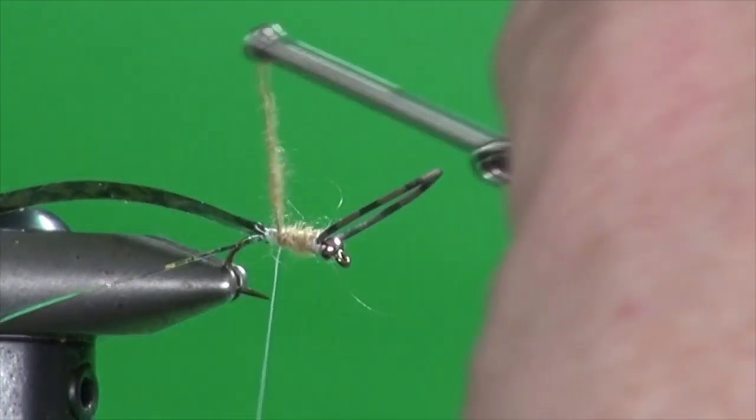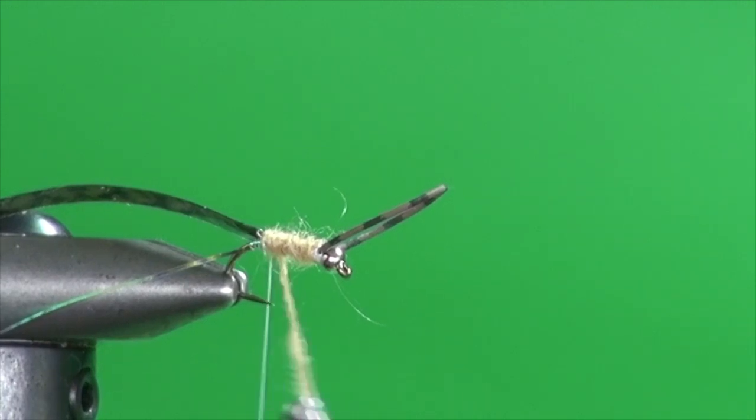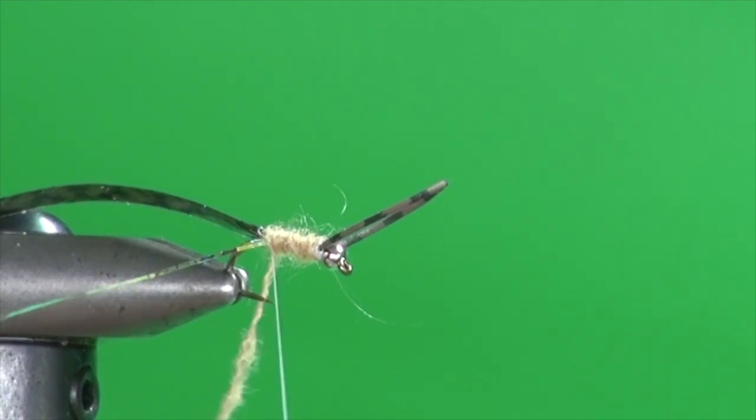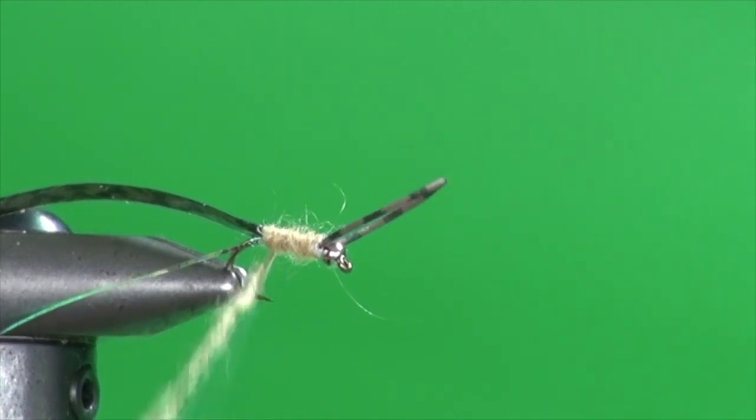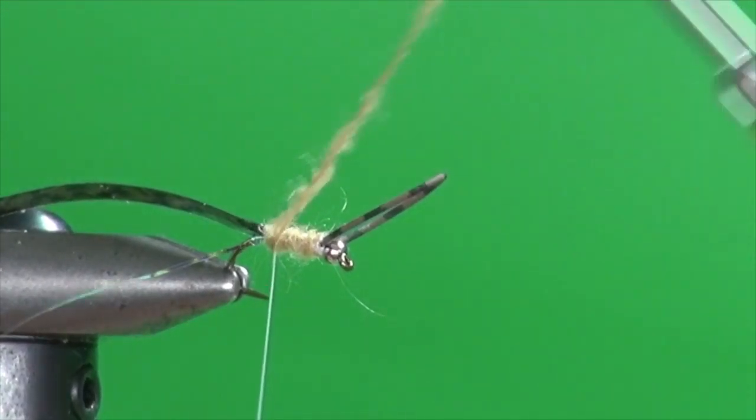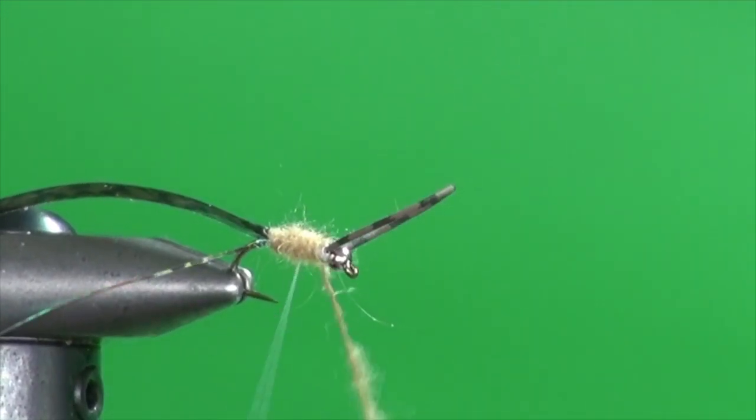And I'm just going to use this and walk the thread back. That way it doesn't get in the way. And then just flip that underneath and walk this forward. So one wrap down on this number 12 and one wrap up is about the right proportions for the body.